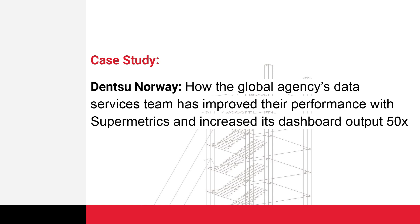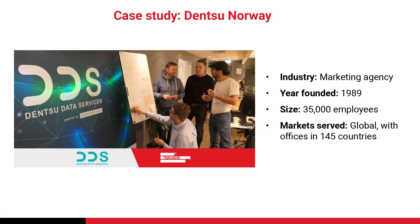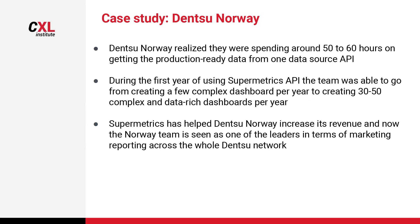Let's look at another use case from the agency side. Denso Norway is a subsidiary of Denso, a marketing agency founded in 1989 with 35,000 employees worldwide. They realized they were spending 50 to 60 hours getting production-related data from one data source API. During the first year of using Supermetrics API, the team went from creating just a few complex dashboards to 30 to 60 complex, data-rich dashboards per year. Supermetrics helped Denso Norway increase revenue, and the Norway team is now seen as one of the leaders in marketing reporting across the entire Denso agency network.